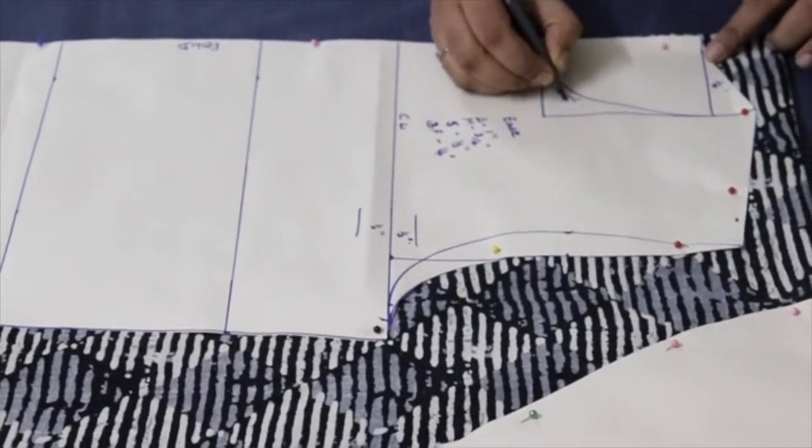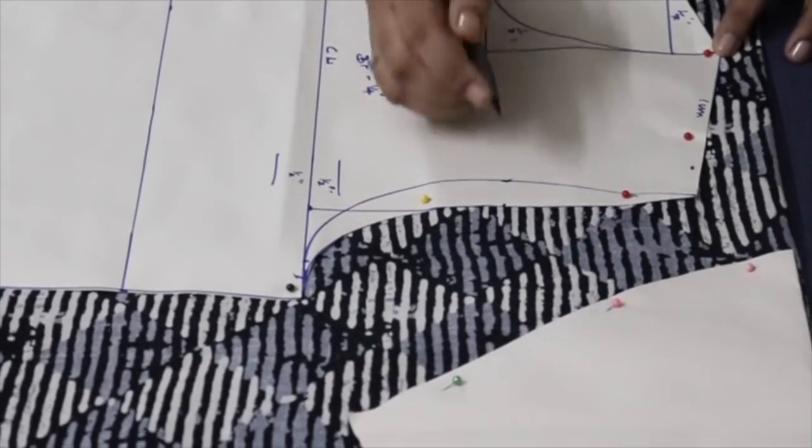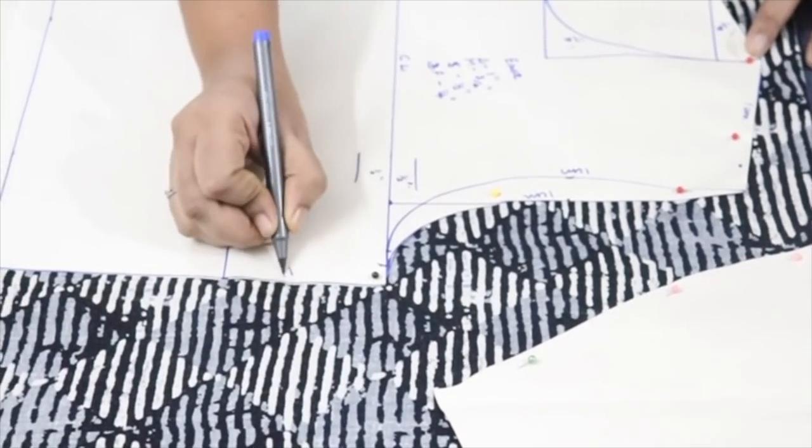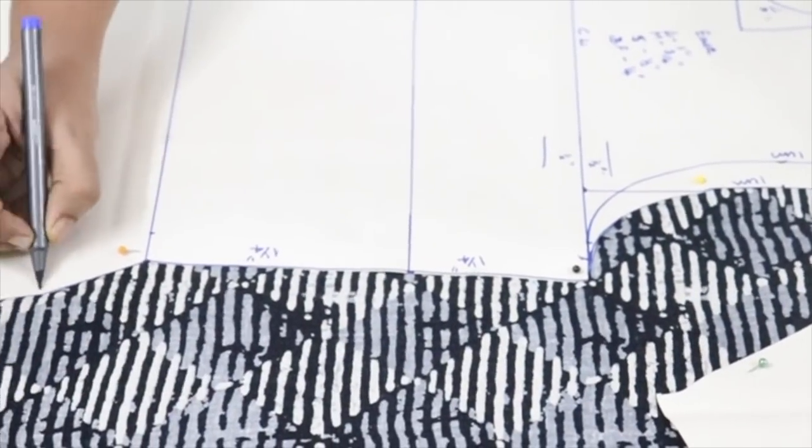Now for the seam allowance for the neck part you have to give one fourth. For shoulder you have to give one centimeter. For arm part one centimeter. And in the side you have to give one and one fourth.